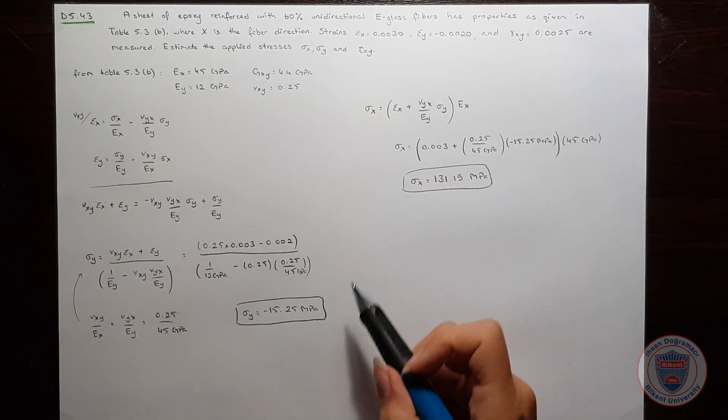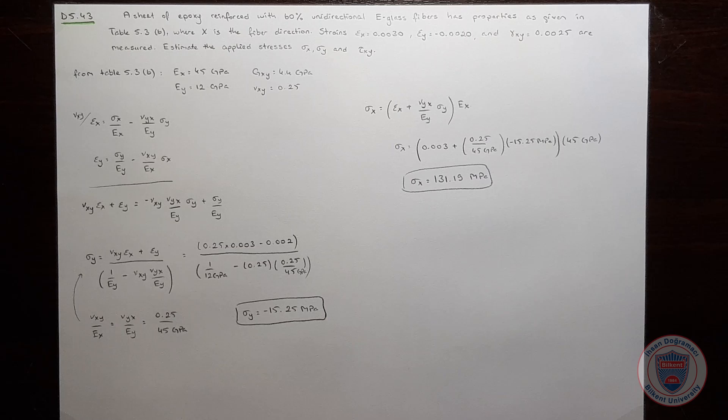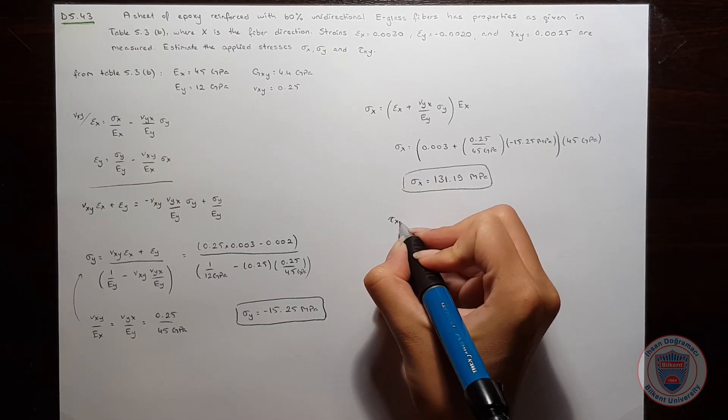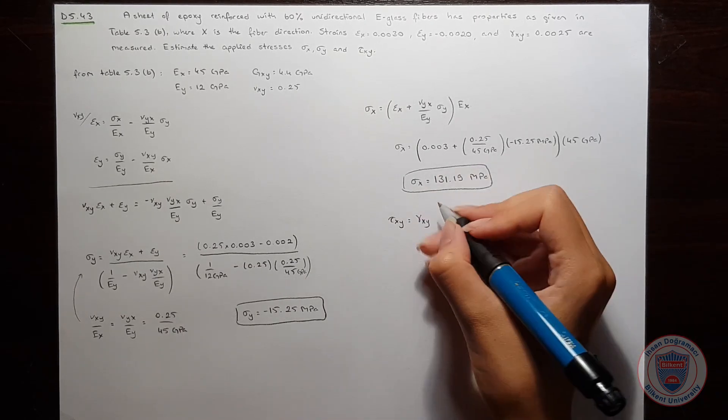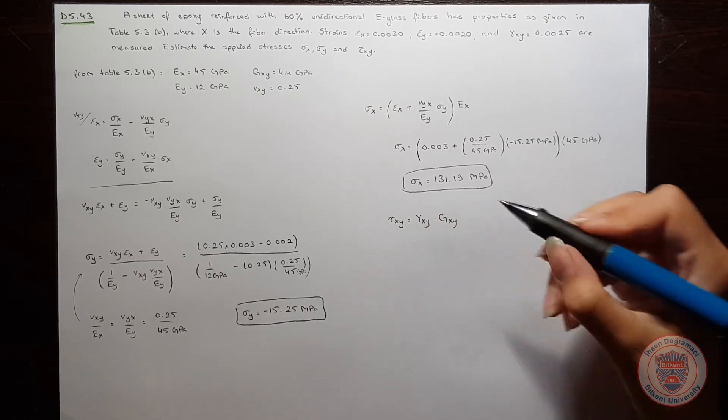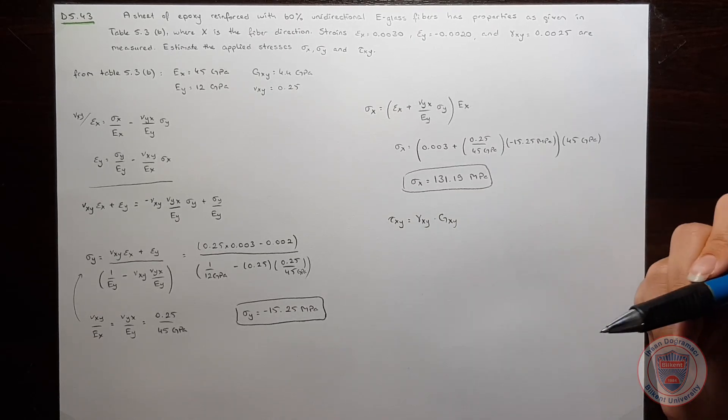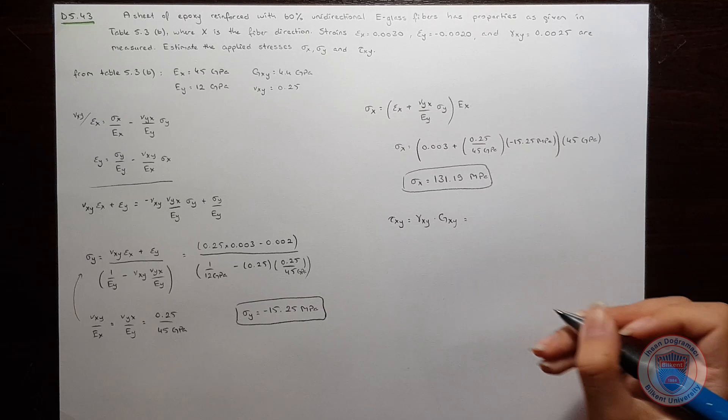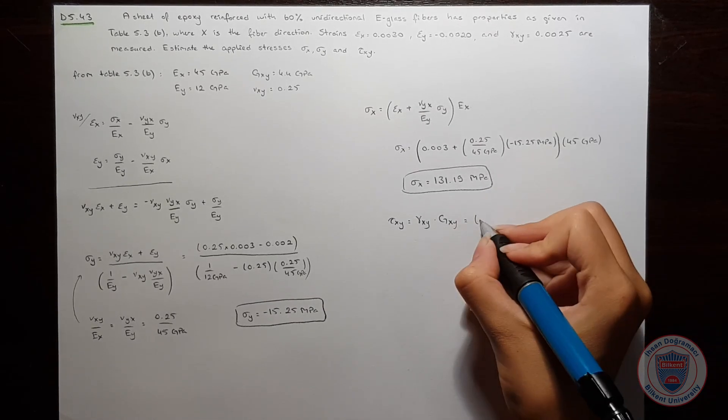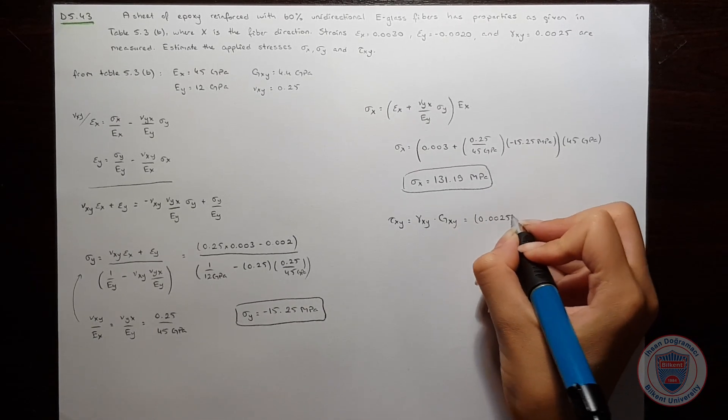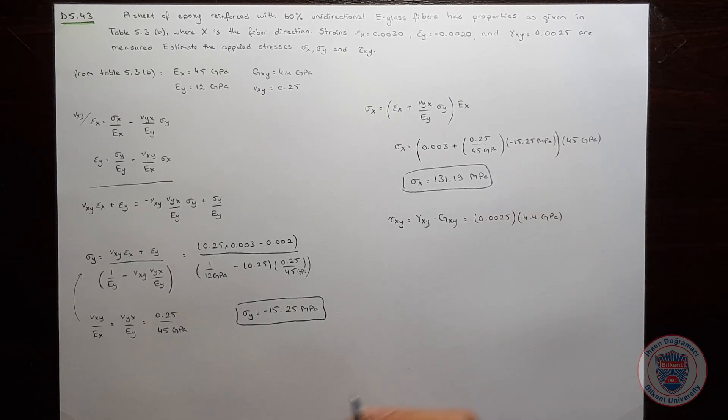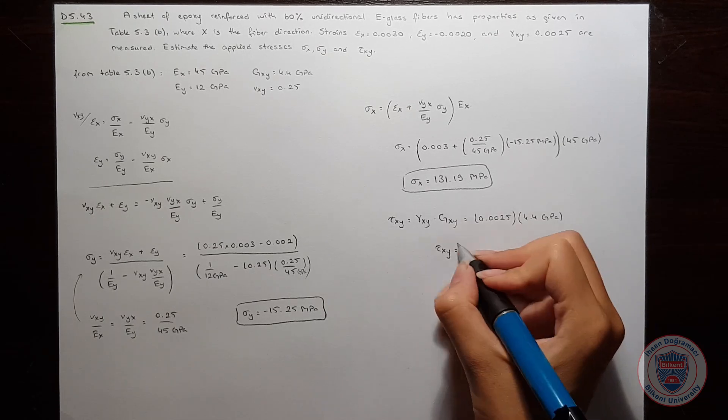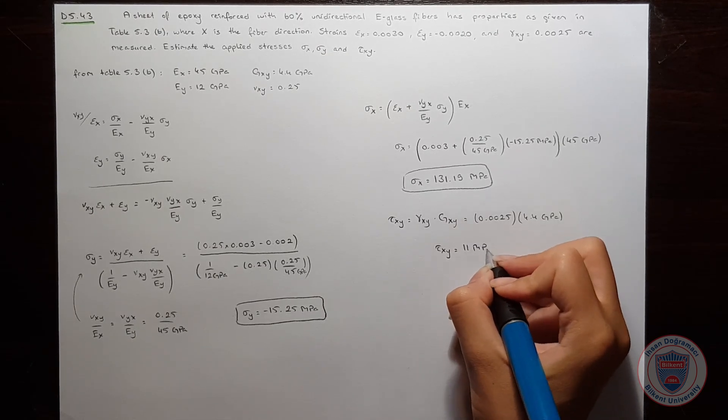Now we are done with the normal stresses, so let's find τxy then. τxy is equal to γxy times Gxy. We know Gxy, we know γxy, so just substitute the values and we get τxy is equal to 11 MPa.